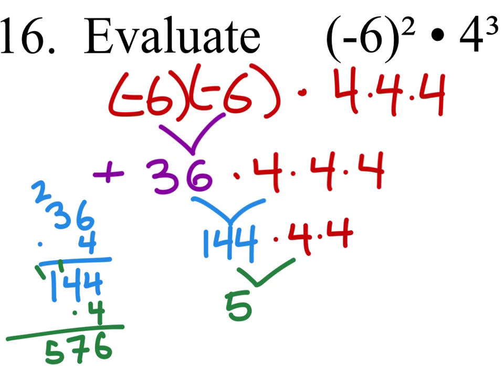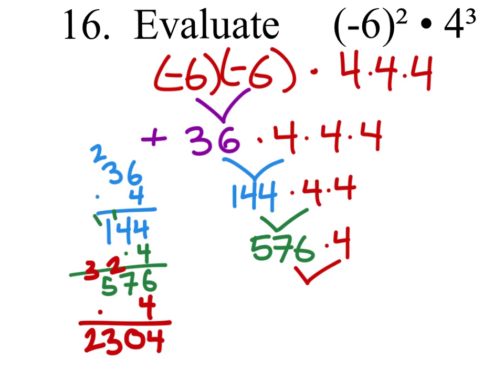So now I have 576 times 4, which I'll continue to use those calculations on the left. I've done that final 4 calculation for you. So 576 times 4 is 2,304. There's nothing else to multiply, nothing to divide, add, or subtract. And that's it.